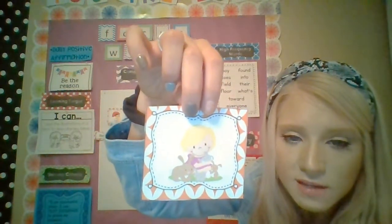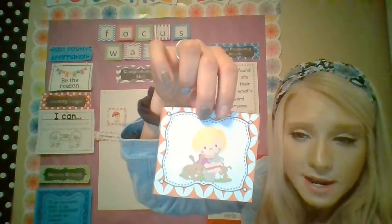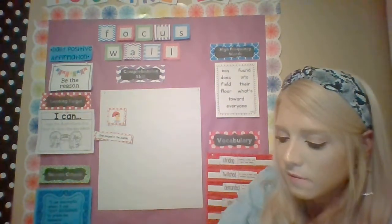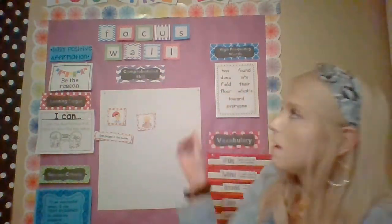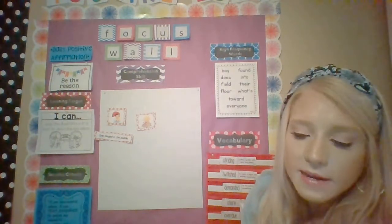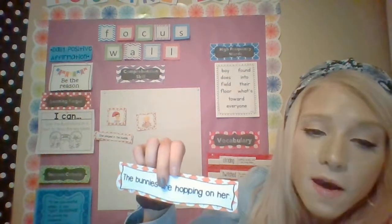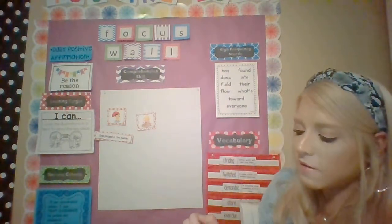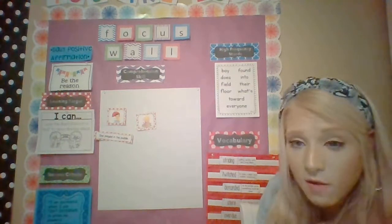Brainstorm some key ideas or details of what could be happening in this cute little illustration. You can pause the video if you need more time. You probably had some very good detailed ideas. I came up with: the bunnies are hopping and popping all over her and playing with her — instead of just saying 'it's a kid sitting with bunnies.' The more detailed version is they're hopping all over her. Doesn't that sound better?